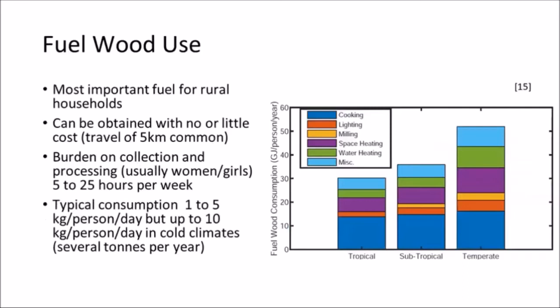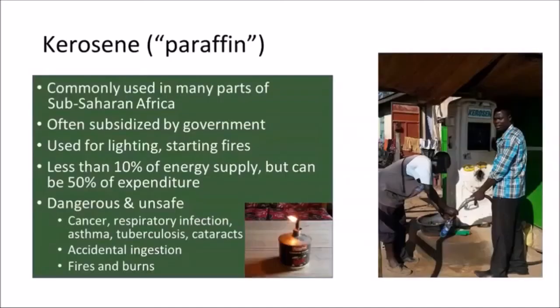The use of fuel wood really depends on where in the world you are, but its primary use is for cooking, with some other uses like space heating. Even though fuel wood is free to gather, it can be extremely inconvenient — you might have to walk five kilometers or more to find it, and then carry it back. The collective burden on a family might be up to 25 hours per week, usually done by women and girls — time that could be spent in school or on more productive activities. If you look at how much fuel wood is actually needed, it's usually a few kilograms per person per day, which easily adds up to several tons a year depending on household size.